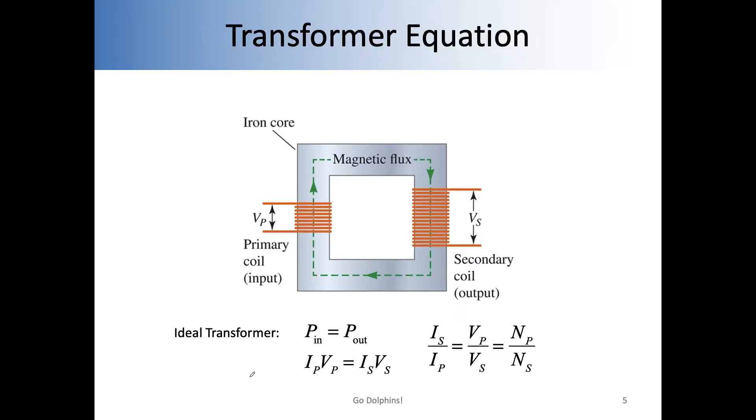And also for an ideal transformer, we assume there is no energy loss. So the power on this side is given by V_P I_P. The power on this side is given by V_S I_S. And this should be equal. We can call it P_in and P_out. So P_in should be equal to P_out.